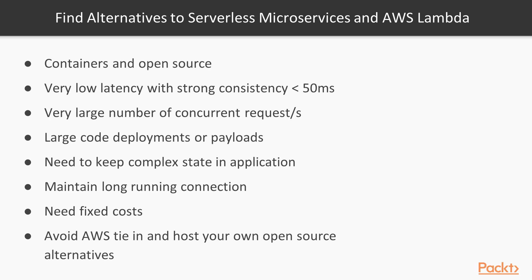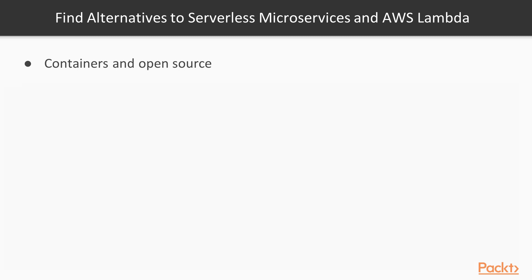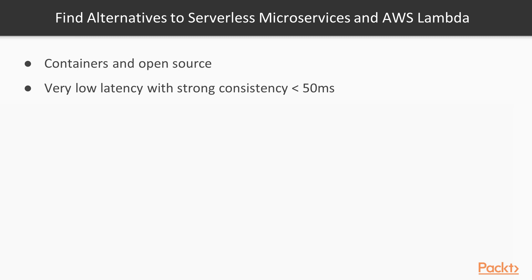Although this course is about serverless, I think it's important to provide a balanced view. Let's look at when serverless microservices and AWS Lambda are not suitable and what alternatives are available. If your organization is already using containers and only open source software is allowed, then AWS Lambda and some of the AWS services will not be suitable. If your non-functional requirements are to have very low latency with strong consistency of maybe less than 50 milliseconds excluding any caching, or if there's a very large number of requests per second — maybe more than 3,000 concurrent requests per second — without any ability to cache the data, then a serverless stack will be slower and probably cost more than having an always-on fleet.